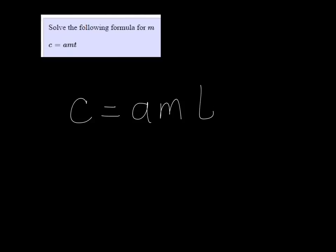Here we want to solve c equals amt for m. That means to get m by itself. m is multiplied by a and by t, so to get rid of those, I undo multiplication with division.